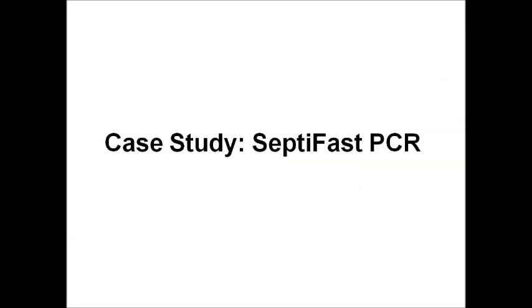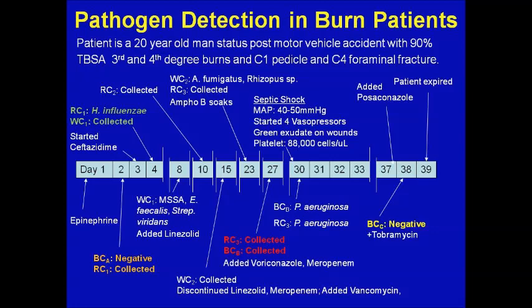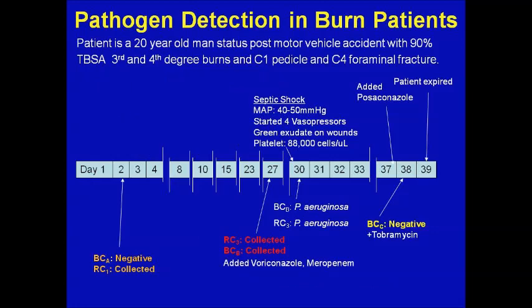What does this mean clinically? PCR has been around since the 1980s and has grown enormously, but how does it help patients? Here is a case: a 20-year-old man with a motor vehicle accident resulting in 90% burns including third and fourth degree burns and a neck fracture. The patient came in on day one already hypotensive, requiring epinephrine. On day 27, respiratory cultures and blood cultures were collected, and the patient was started empirically on voriconazole and meropenem due to a spiking fever — standard protocol for burn patients.